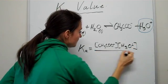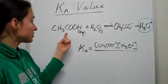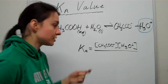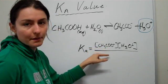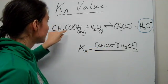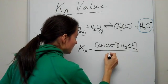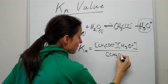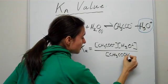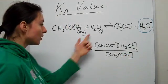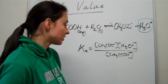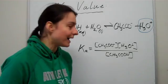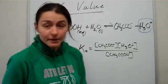Then you divide by the concentration of your reactants, which is CH3COOH. So here we have products divided by reactants. We really don't care about water in this equilibrium because water has no concentration, as we spoke about in the past.